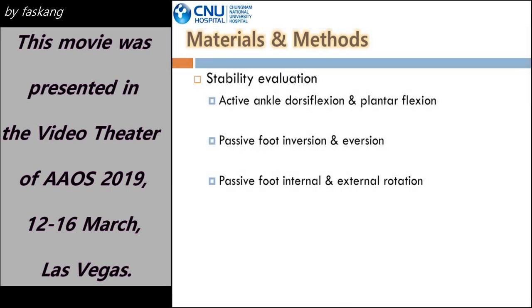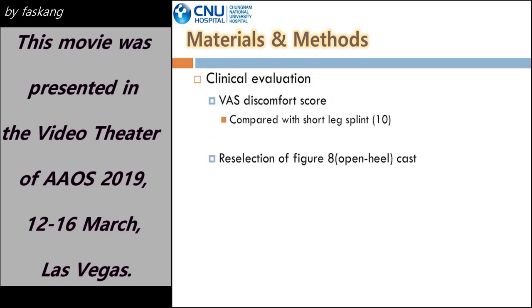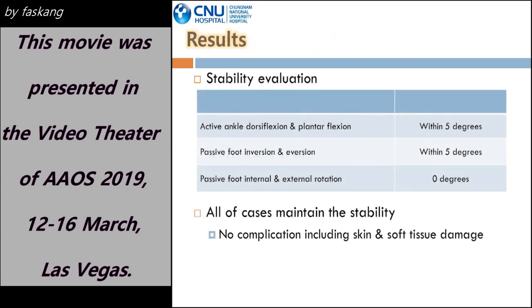To assess stability, the degree of change in active plantar and dorsiflexion, passive foot inversion-eversion, and abduction-adduction motion range was measured. In all cases, the range of active plantar and dorsiflexion was within 5 degrees, the range of passive foot inversion-eversion was within 5 degrees, the foot motion range of abduction-adduction was 0 degrees, and it remained stable until removal of the cast without damaging the skin and soft tissue.